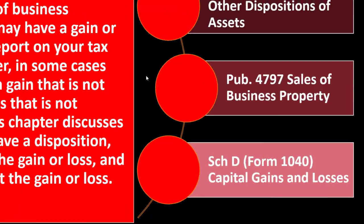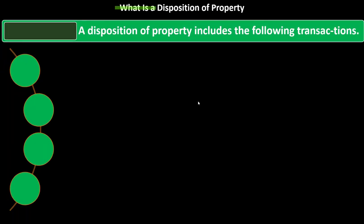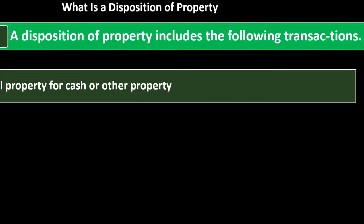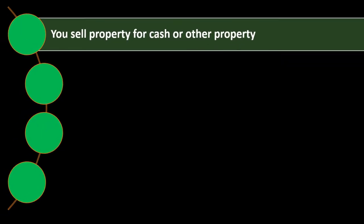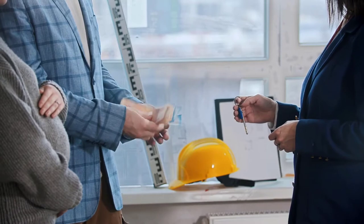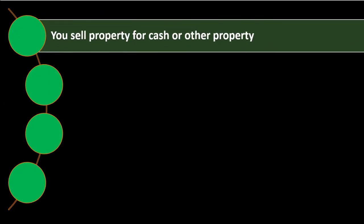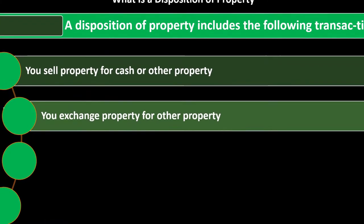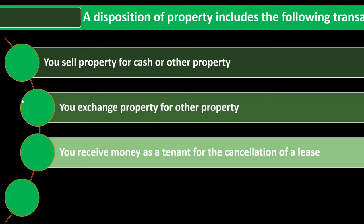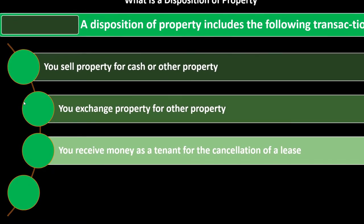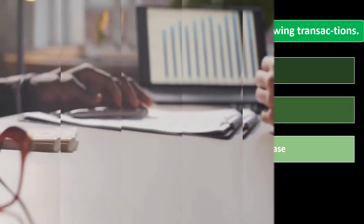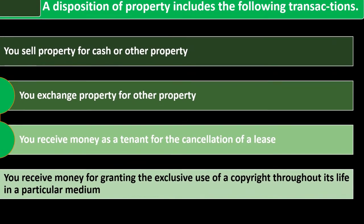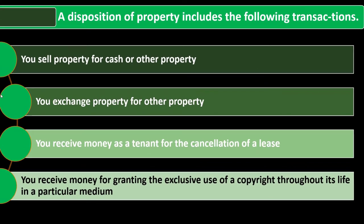What is a disposition of property? A disposition includes the following transactions: you sell property for cash or other property — even if you receive other property in exchange, it's still a sale and must be reported. You exchange property for other property. You receive money as a tenant for the cancellation of a lease. You receive money for granting the exclusive use of a copyright through its life in a particular medium.